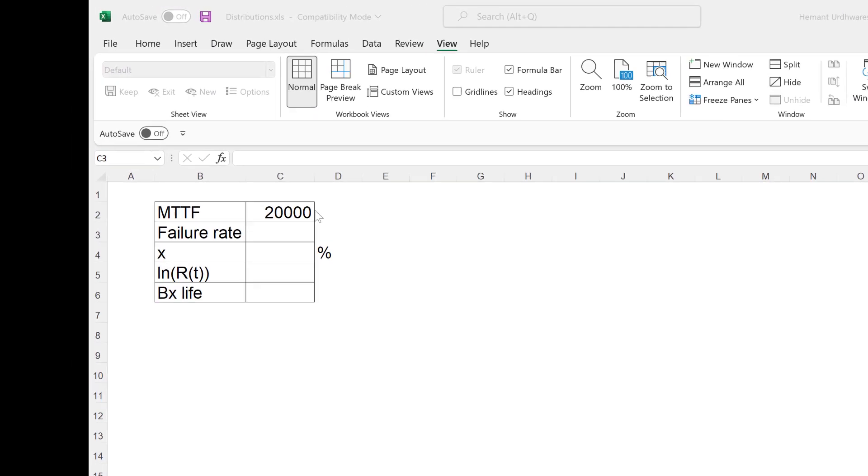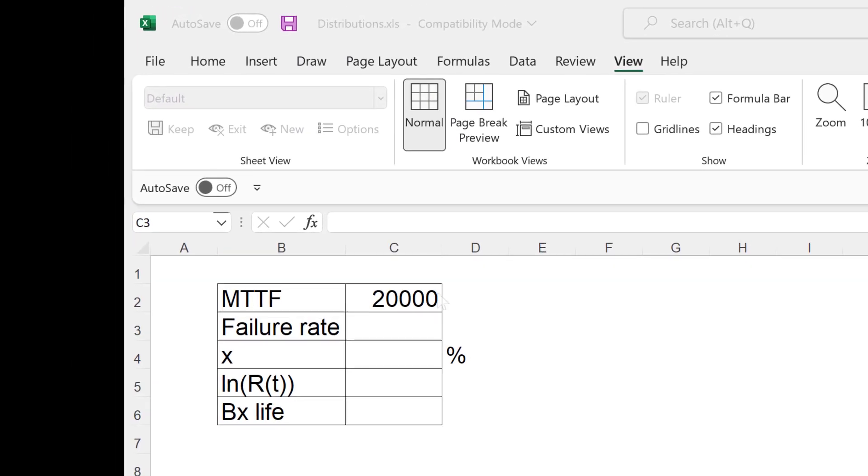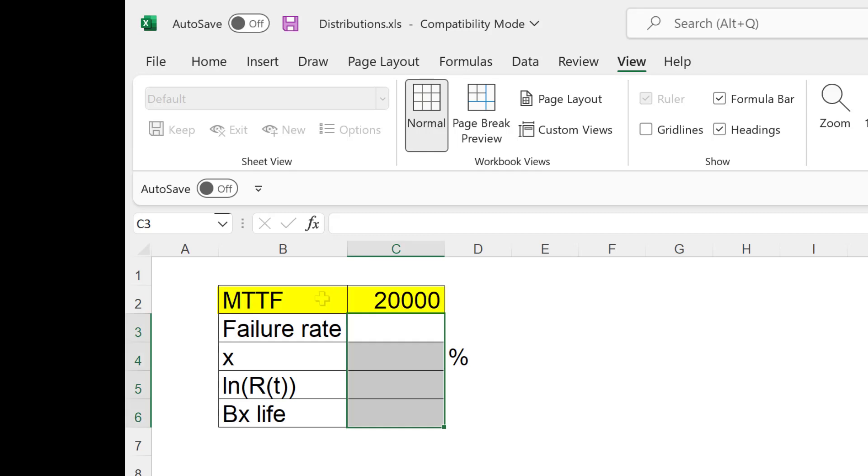We can also use Microsoft Excel to perform this calculation. I have entered value of MTTF equal to 20,000 in this template. The failure rate will be reciprocal of the mean time to failure, so that will be lambda. X is 10 percent. Suppose we want to estimate the B10 life.